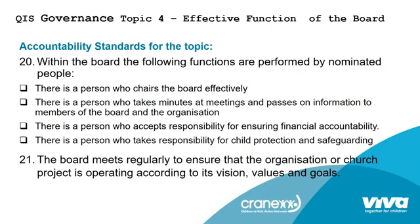Standard number 20: within the board, the following functions are performed by nominated people — a person who chairs the board effectively, one who takes minutes of meetings and passes on information to the members of the board and the organization, a person who accepts responsibility for ensuring financial accountability, and a person who takes responsibility for child protection and safeguarding. Standard 21: the board meets regularly to ensure that the organization or church project is operating according to its vision, values, and goals.